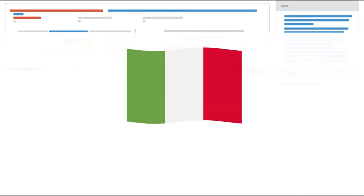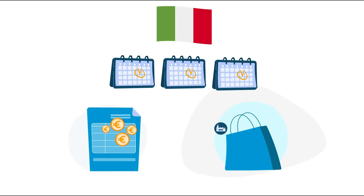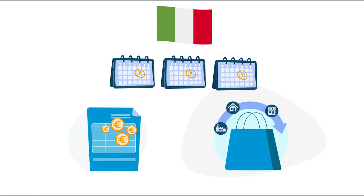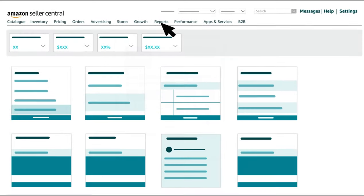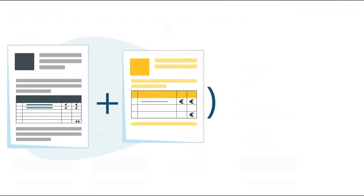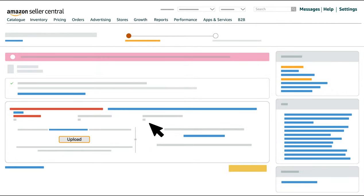Please also take into account that if you file quarterly in Italy and pay your VAT liability quarterly as well, a 1% surcharge will be included in the final amount showing on Seller Central. This means that you have to multiply the final amount of your manual calculation by 1.01 to get the amount displayed on Seller Central.